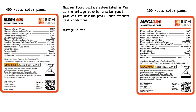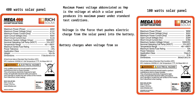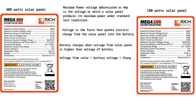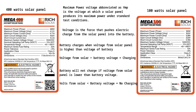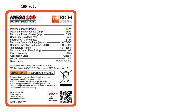This is because voltage is the force that pushes electric current from the solar panel into the battery. That is why the voltage produced by a solar panel must be higher than the voltage of the battery to be charged. Let us use the 100-watt and 400-watt solar panel to explain how the maximum power voltage affects the solar setup.